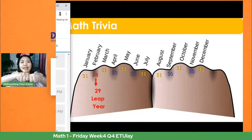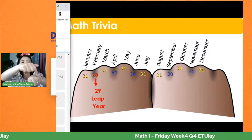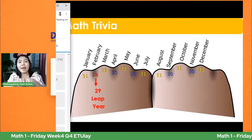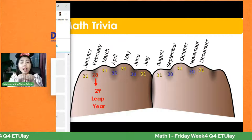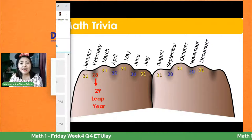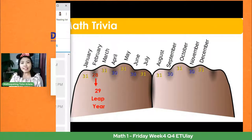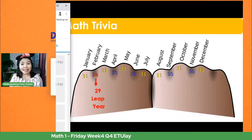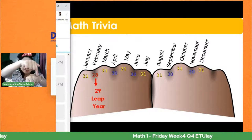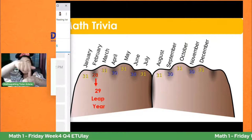Ayan yung ating fist o yung ating kamao. Ito yung ating joint, yung ating knuckle. Bilangin natin — meron tayong 1, 2, 3, 4, 5, 6, 7, 8. Kailangan natin ay 12 para matandaan natin ang 12 months in a year at kung ilang araw per month in a year. Itong unang ito, this will represent January. Yung Enero natin.